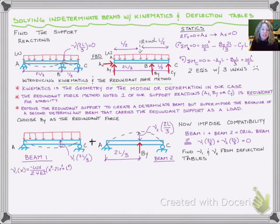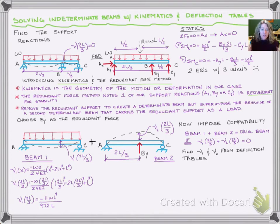Now for B1, we write the elastic curve equation: negative WX over 24 EI. We plug in X equals 2L over 3 and solve. We get negative 11 WL to the fourth over 972 EI on the bottom. That's 972 EI, not 972L.